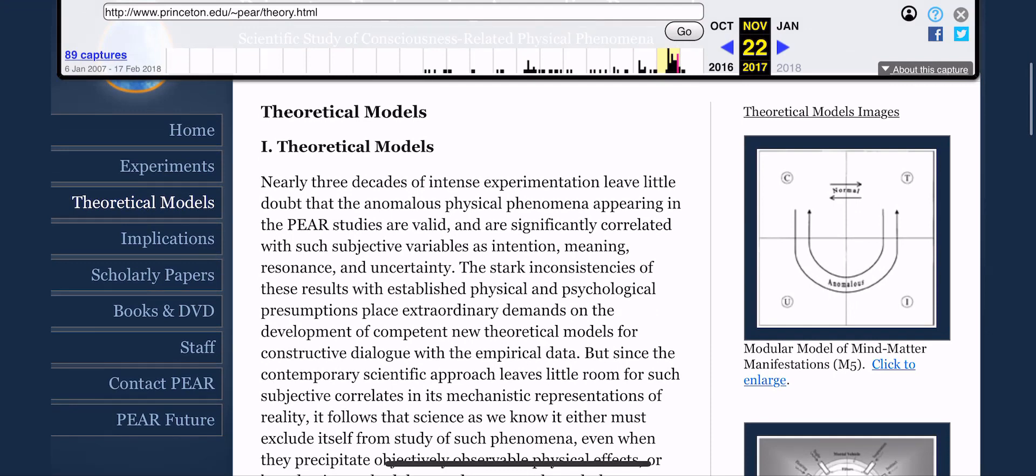Here they talk about theoretical models. Nearly three decades of intense experimentation leave little doubt that the anomalous physical phenomena appearing in the PEAR studies are valid and are significantly correlated with such subjective variables as intention, meaning, resonance, and uncertainties. They go on to discuss how these don't really fit into normal scientific framework, therefore you can't quantify these measures as you can other scientific endeavors. So that would be expected if you were inside a virtual reality.